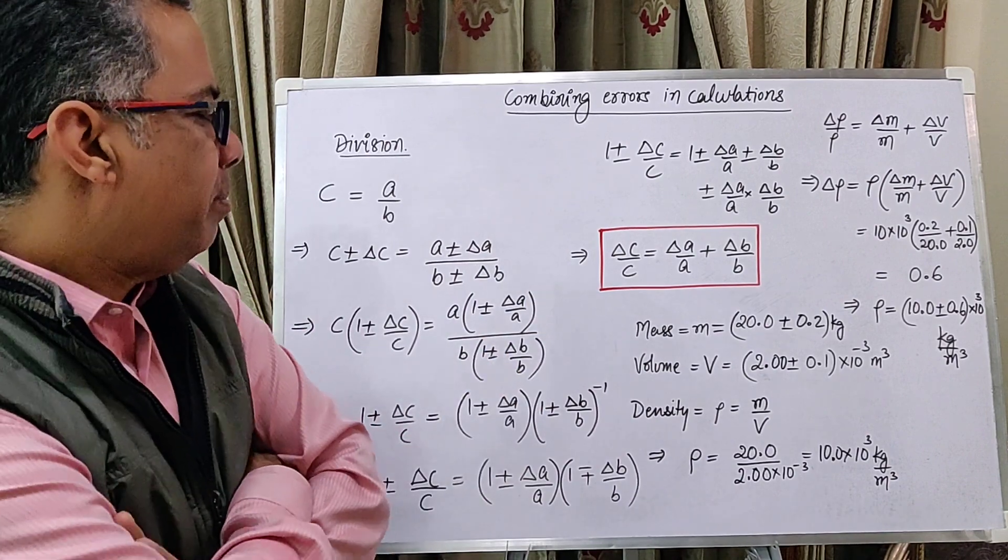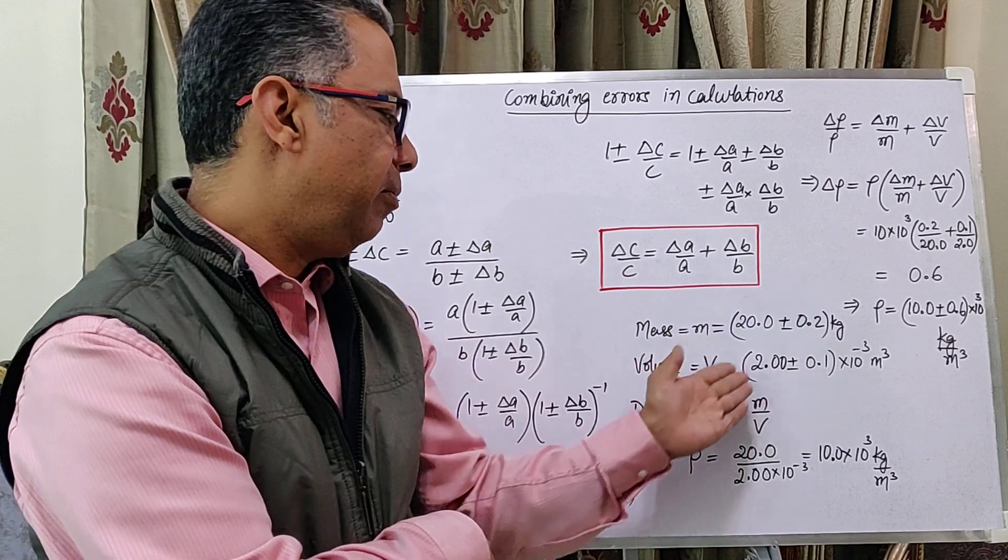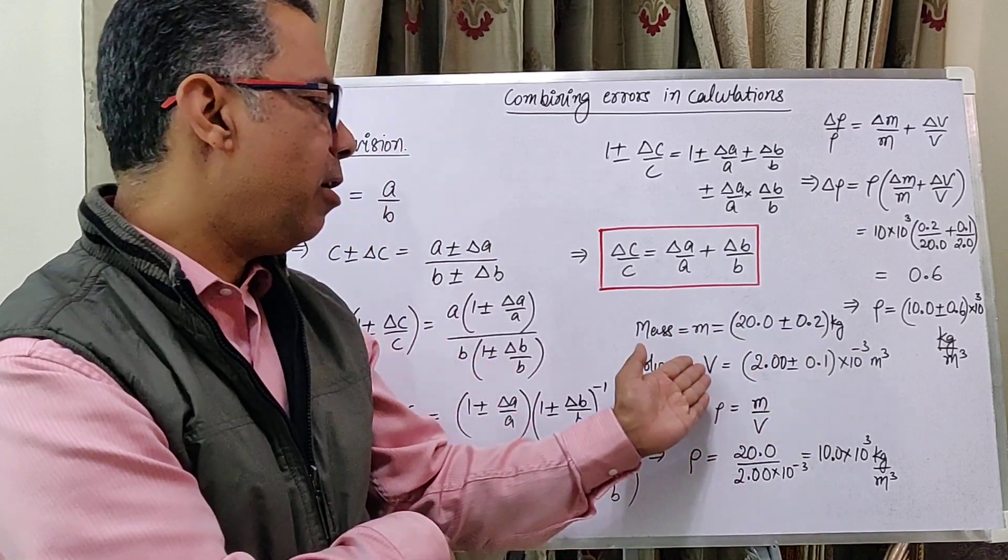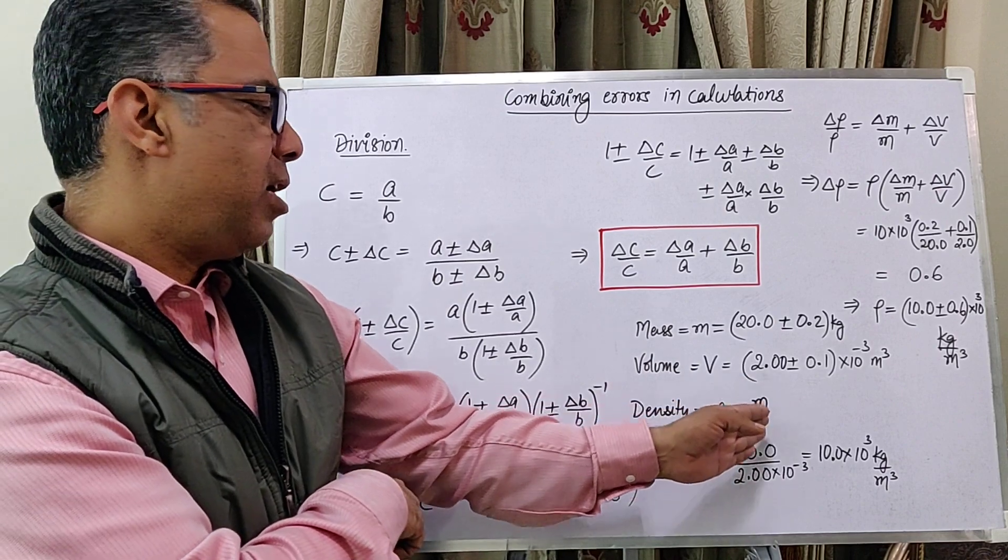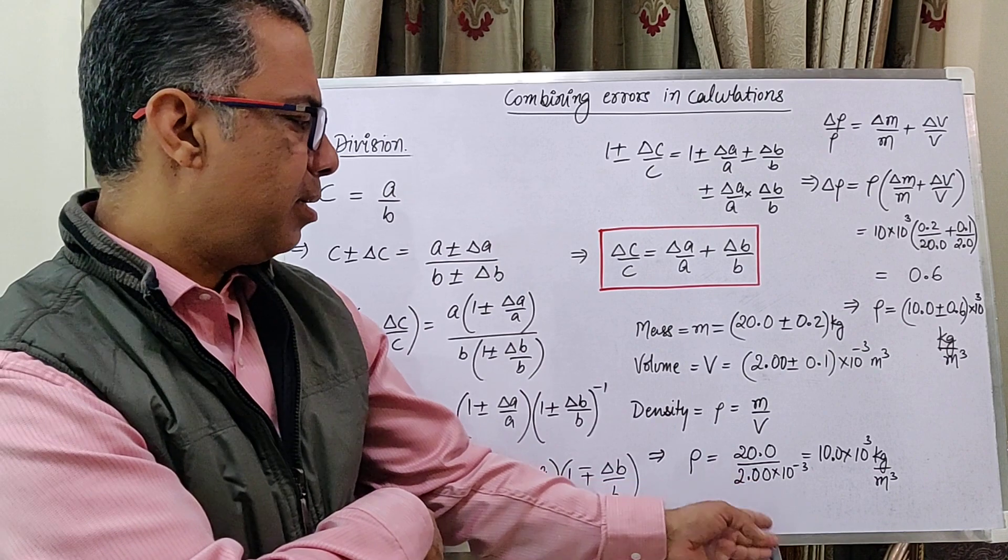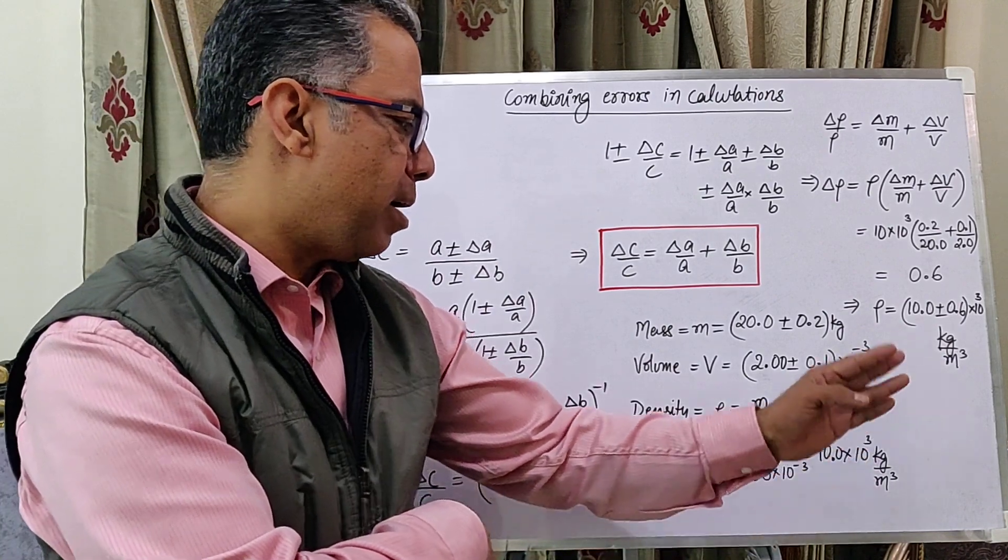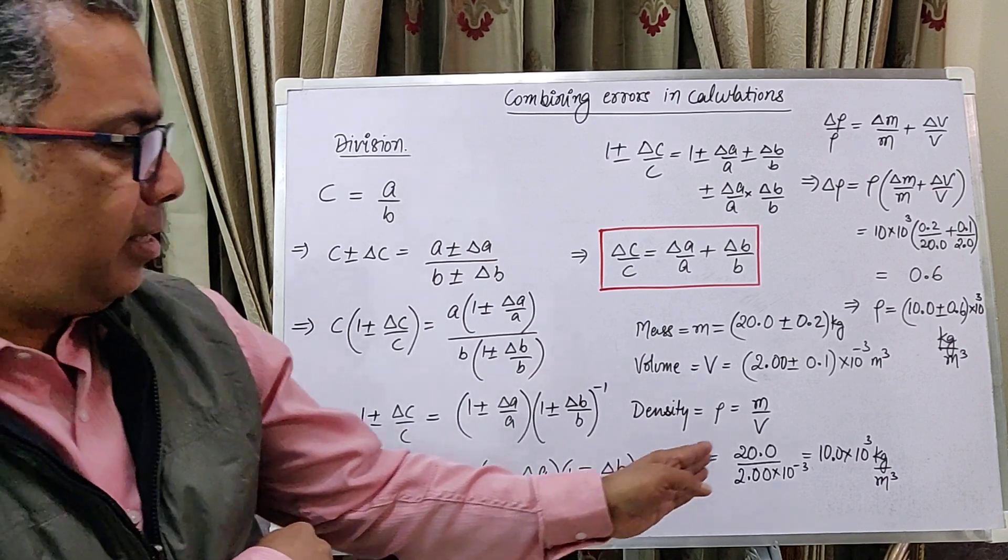Let's take a simple example where we are calculating density. We are given the mass of an object, we are given the volume. Density is, of course, obtained by dividing mass by volume. And on doing that, we get 10.0 into 10 to the power 3 kg per meter cube. Now, that's the density here.